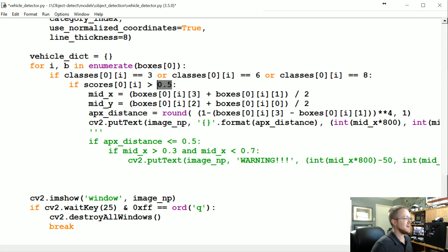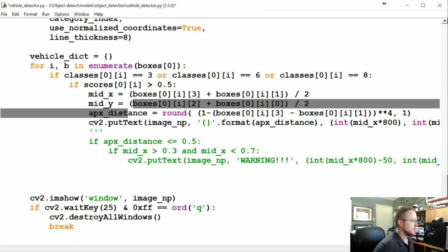As long as their score is above 50 percent, so if we're fairly confident it's a car, then what we want to do is we're going to take the approximate distance and we're going to store that as the key in the vehicle dictionary. Then we're going to store the locations of all the vehicles with mid x, mid y, and then I'm also going to store the score.